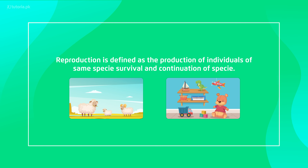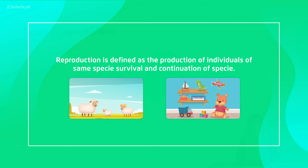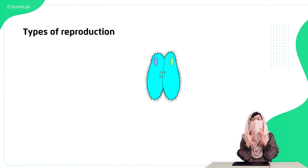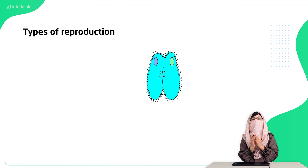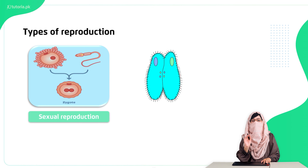Reproduction is essential for the survival of any organism. Basically, reproduction is of two types.